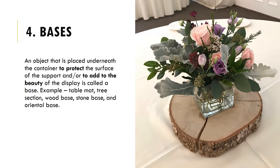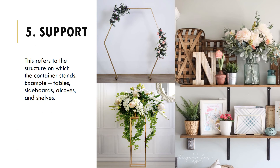The fourth thing needed is the bases — objects placed underneath the container to protect the surface of the support or to add beauty to the display. Examples are table mats, tree sections, wood bases, stone bases, and oriental bases. The fifth thing is support — a structure used to support the container, with examples including tables, sideboards, alcoves, and shelves.